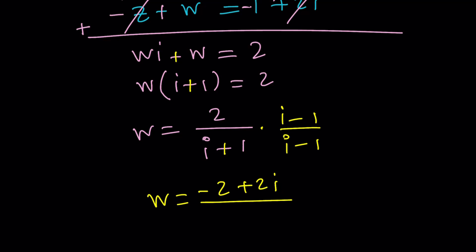i squared is negative 1. Remember, this is sum of two squares, right? So it's going to be negative 1 minus 1. Make sense? So that's going to be actually a negative 2.